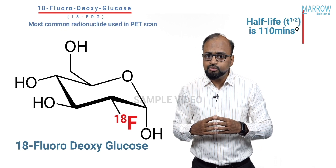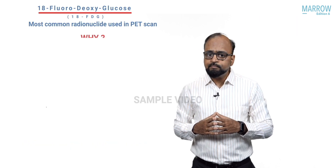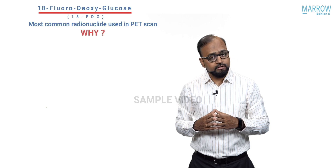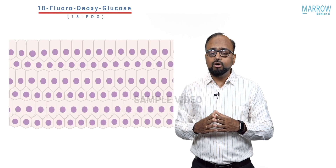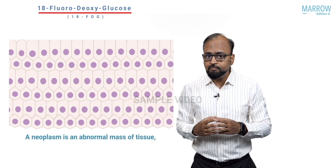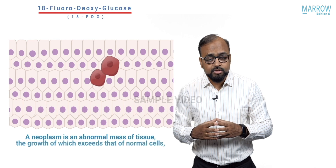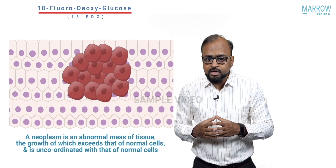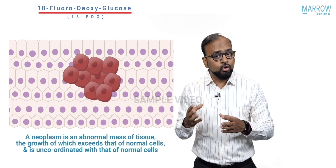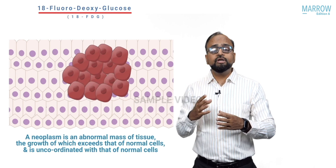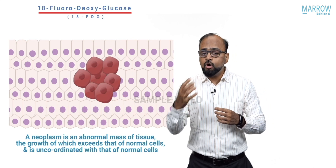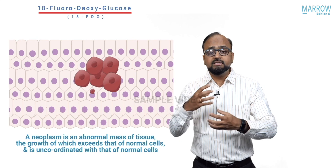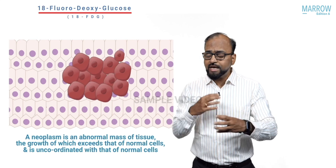Why is 18-FDG the most common radionuclide used in PET scan? The answer lies not in radiology but in pathology. A cancer or neoplasm is defined as an abnormal mass of tissue whose growth exceeds that of normal tissues in an uncoordinated manner. One of the most important properties of a cancer cell is to divide very rapidly — cancer cells replicate extremely rapidly.